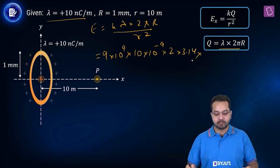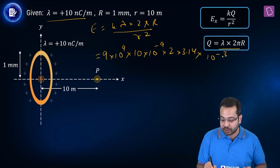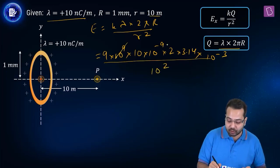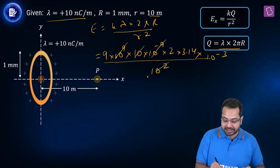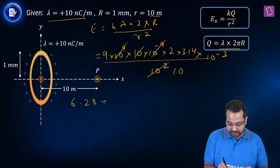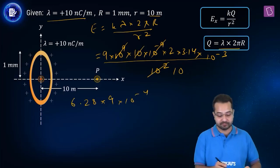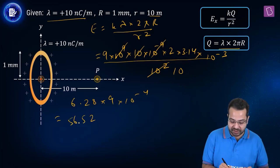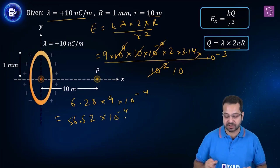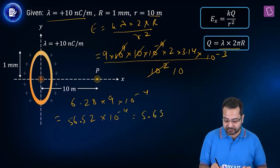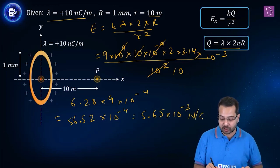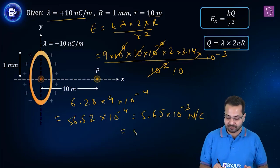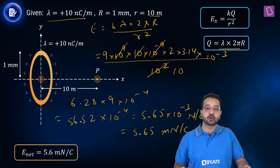Multiplied by 2 × 3.14, multiplied by capital R = 1 millimeter = 10⁻³ meter, divided by r² = 10² = 100. The 10⁹ and 10⁻⁹ cancel, and one factor of 10 from r cancels with one from R. Left with 6.28 × 9 × 10⁻⁴. That gives 56.52 × 10⁻⁴ = 5.65 × 10⁻³ Newton per Coulomb, or 5.65 milliNewton per Coulomb. Option A is the correct option.